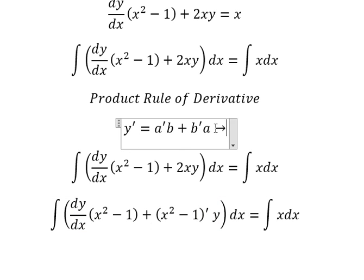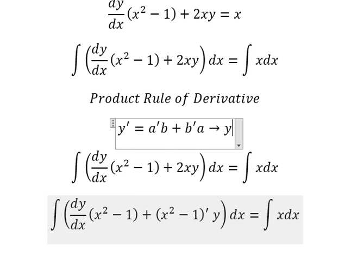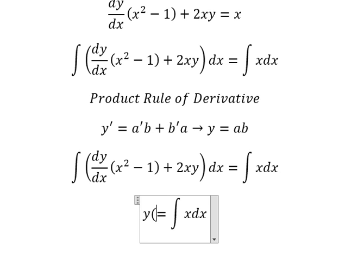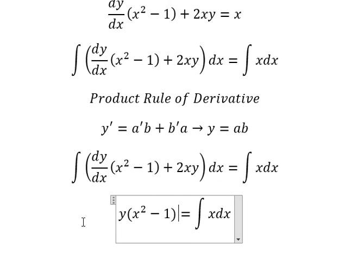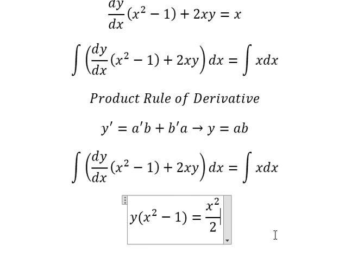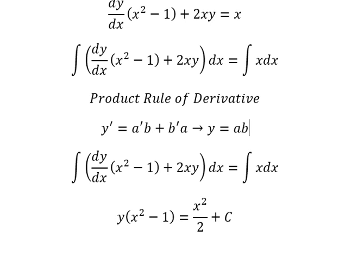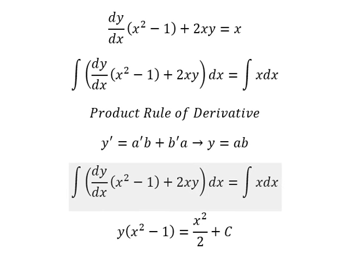So from the integration of this, we have y equals a times b. The integration gives us y multiplied by x squared minus one. The integration of the right side gives us x squared over 2, and I will add the constant c. This is the end — thank you for watching.